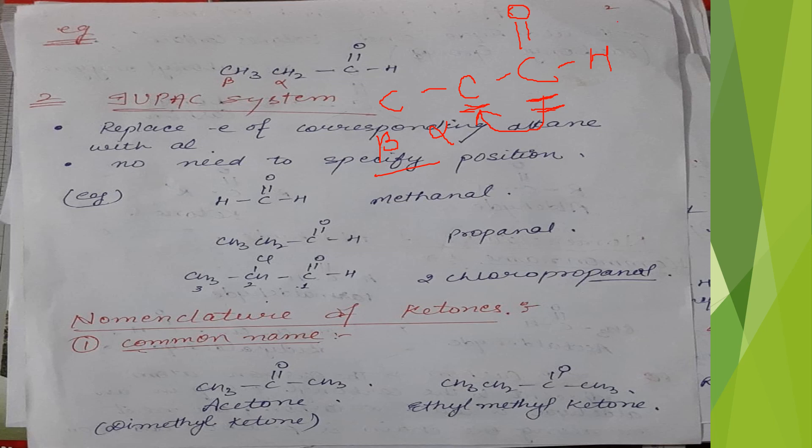When writing the compound structure, the first carbon adjacent to the carbonyl carbon is called the alpha carbon, and the second carbon is called the beta carbon.